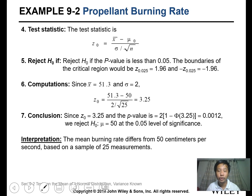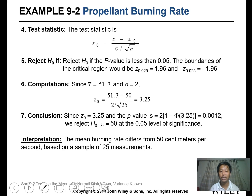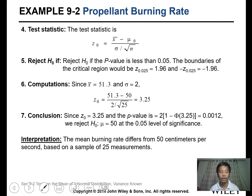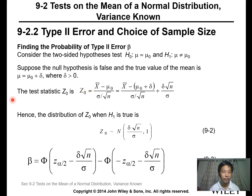Using the p-value approach: take the probability for Z equals 3.25 and multiply by 2 since it is two-sided. This gives 0.0012, which is less than 0.05, so we reject the null hypothesis. Conclusion: the mean burning rate differs from 50 cm/s based on the 25 samples. The next lesson will cover the determination of the Type 2 error.